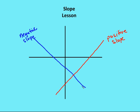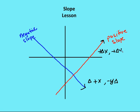If we have a negative slope, that slope is going to go down and to the right. If we have a positive slope, that slope is going to go up and to the right. That means for every positive change in x, we have a negative change in y for a negative slope. For a positive slope, we have a positive change in x and a positive change in y.